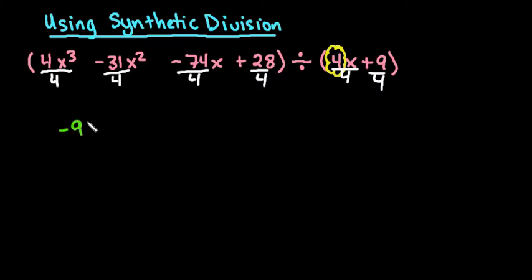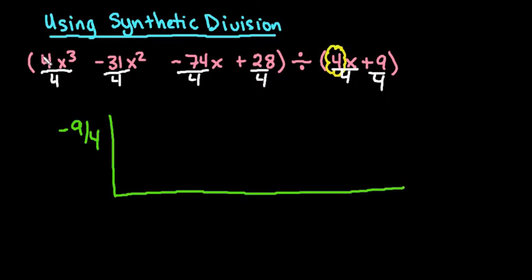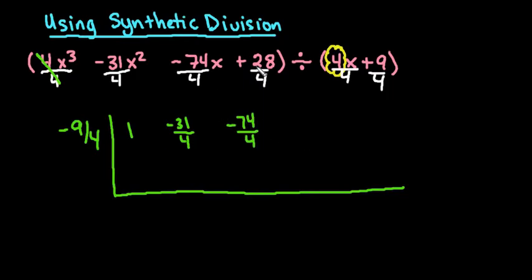On the outside we now have negative 9 fourths. Inside, the first term simplifies to 1. I'm going to leave the next term as negative 31 over 4 rather than converting to a decimal, because later when I multiply it will likely come back to a whole number. The negative 70 fourths I'll also leave as is, but 28 divided by 4 is a whole number, so I'll go ahead and simplify that one.